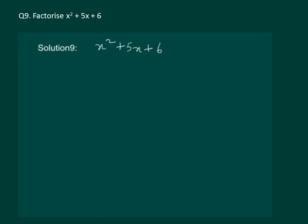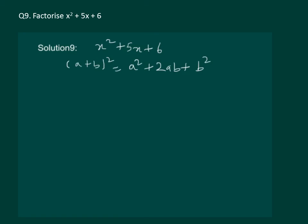Let us read the next question: Factorize x squared plus 5x plus 6. Let us see if we can use a plus b whole square, which equals a squared plus 2ab plus b squared. We can write x squared for a squared, but for b squared we don't have a perfect square — it is 6, and 6 is not a perfect square. So it won't be possible to use a plus b whole square.